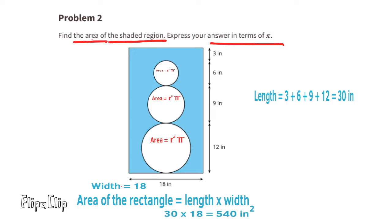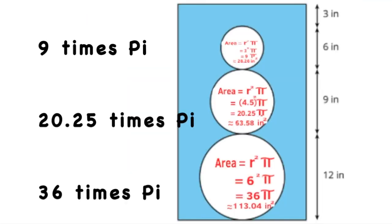We still need to subtract the area of the three circular shapes along the right side of the rectangle. You can see the diameter for each of the circles. Since the radius is half the diameter, the radius of the bottom circle would be 6 inches. 6 squared times pi equals 36 pi inches squared.